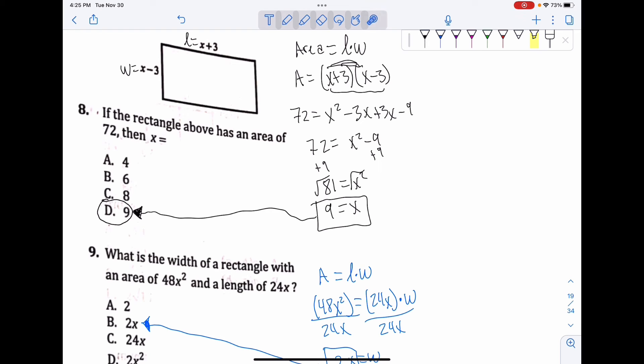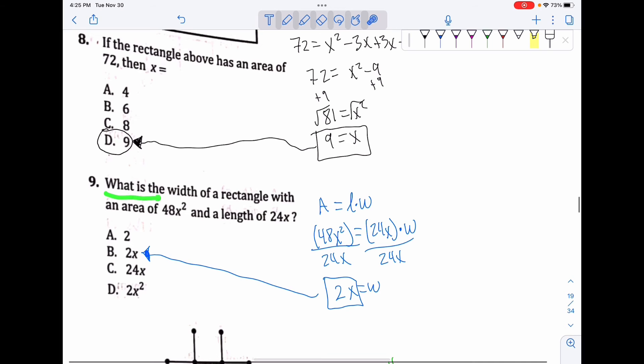What is the width of a rectangle with an area of 48x² and a length of 24x? So again, A = l × w. My area is the same, plug in the l, and we just solve for w. Luckily it's 48 divided by 24, which is just 2x. x² divided by x is just an x. 2x is my answer. Final answer: B.